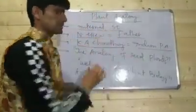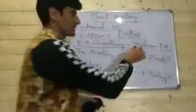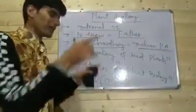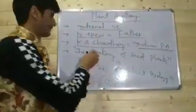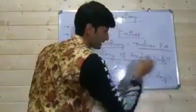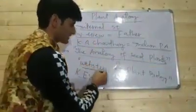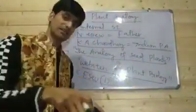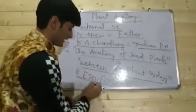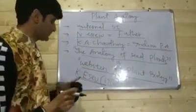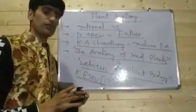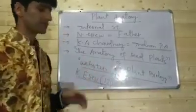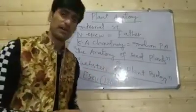K.A. Chaudhary is called the Father of Indian Plant Anatomy. There is a famous book on anatomy called 'The Anatomy of Seed Plants,' also known as 'Webster's of Plant Biology.' Its author is K. Esau, a lady scientist. K. Esau is the author of 'Anatomy of Seed Plants,' also called 'Webster's Plant Biology.'